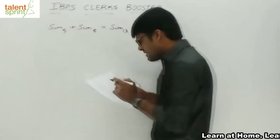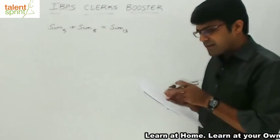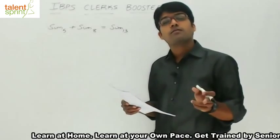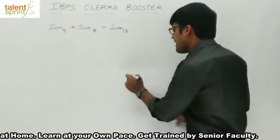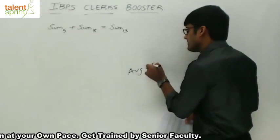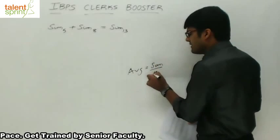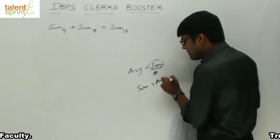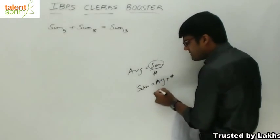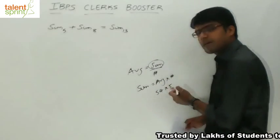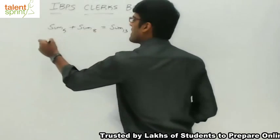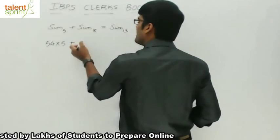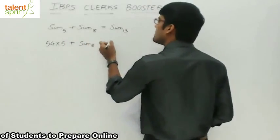What is the sum of first 5 matches? The average score of the first 5 is 54. Sum will be equal to 54 into 5, because average equals sum divided by number of values, so sum equals average into number of values. So sum of first 5 matches is 54 into 5, plus sum of the 8 matches we need to calculate, equals sum of the 13 matches.